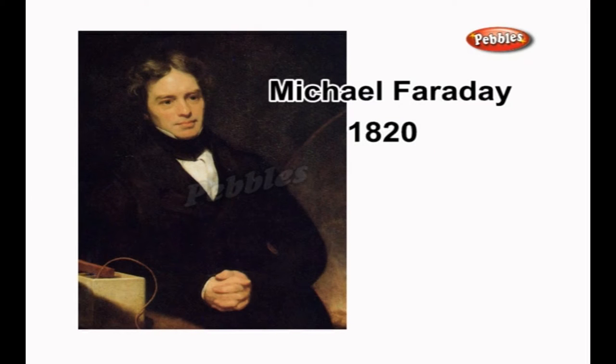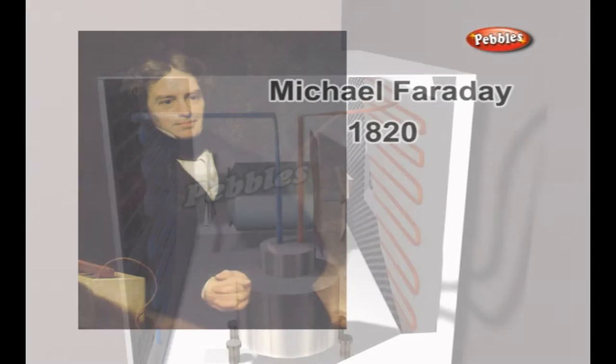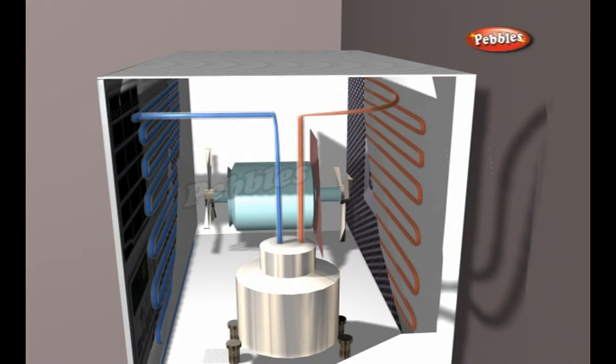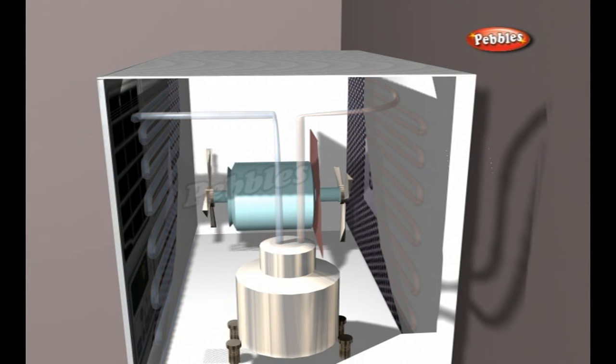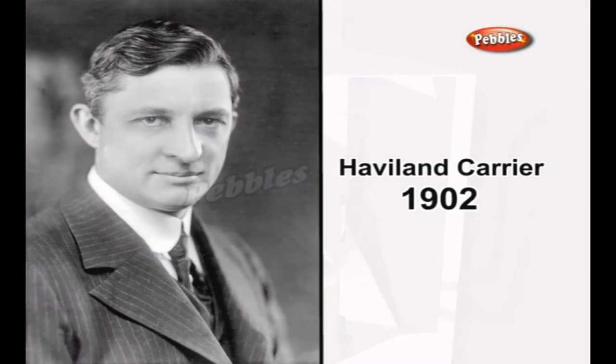In 1820, British scientist and inventor Michael Faraday discovered that compressing and liquefying ammonia could chill air when the liquefied ammonia was allowed to evaporate.